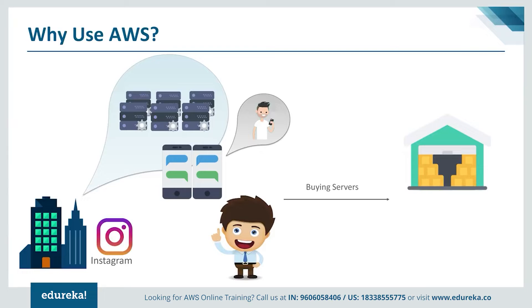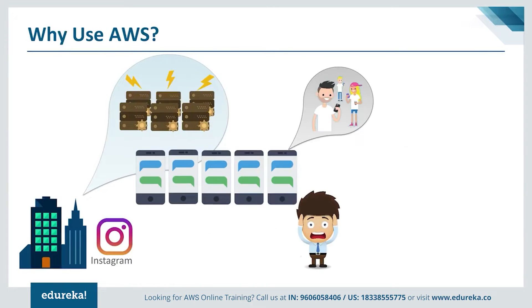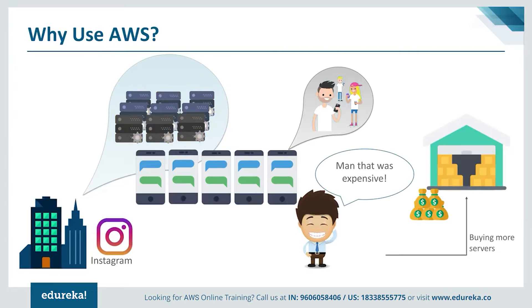So you start with a small user base and expect a certain number of users in a month. But your plan doesn't go according to plan, and what happens is overnight your application becomes so viral that there are millions of users trying to access your application. The servers you had are now very overburdened with the kind of traffic coming in, and you get very anxious as to what to do. So you invest some more money, buy some more servers, and the situation seems a little normal. But guys, servers are machines — we should not forget about that.